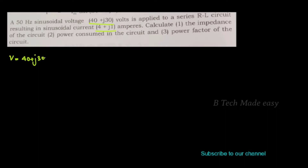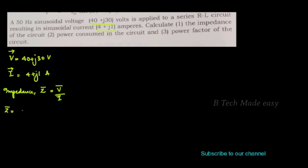The voltage vector V is 40 plus J30 volts, and the current vector I is 4 plus J1 ampere. The impedance Z equals vector E divided by vector I. So Z equals 40 plus J30 divided by 4 plus J1. Converting to polar form: 40 plus J30 is 50 angle 36.9 degrees, and 4 plus J1 is 4.123 angle 14 degrees.